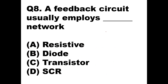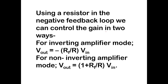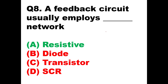Question number eight: a feedback circuit usually employs a dash network. The answer is a resistive network. In a resistive network there is no leading or lagging of current or voltage — it is not reactive — so voltage and current will be in phase, which is what is used for a feedback circuit. Using a resistor in the negative feedback loop, we can control the gain: for inverting amplifier V_out = -(RF/R)·Vin, and for non-inverting V_out = (1 + RF/R)·Vin.